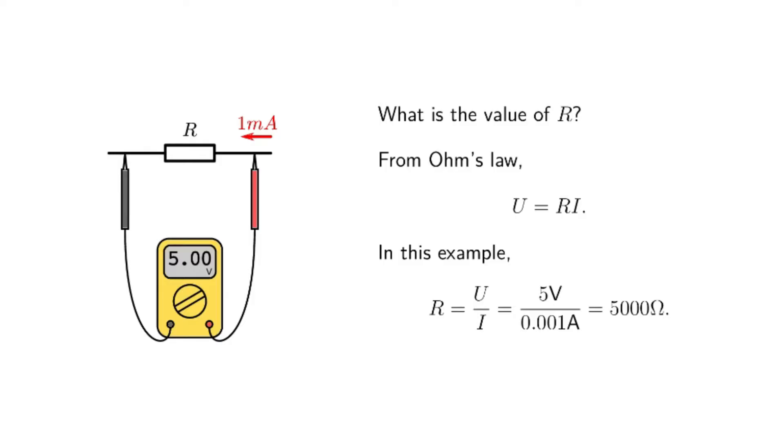Ohm's law states that the voltage we measure will be equal to the product between the resistance and the current. In this example, R will be the voltage divided by the current, which is 5,000 Ohms. This example was very easy.